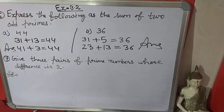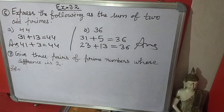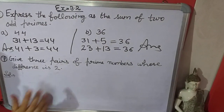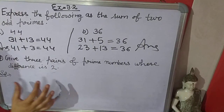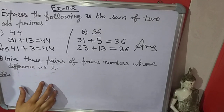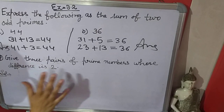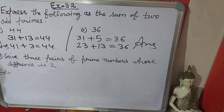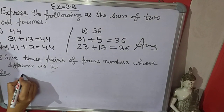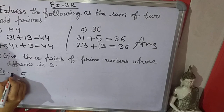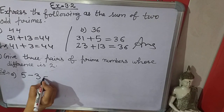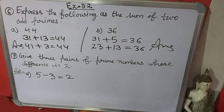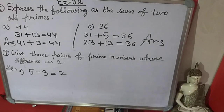The 7th question is: give three pairs of prime numbers whose difference is 2. You have to write pairs where, when you subtract, the difference will be 2 and both numbers of the pair should be prime. The first pair is 5 minus 3 equals 2 — both are prime numbers and the difference is 2.